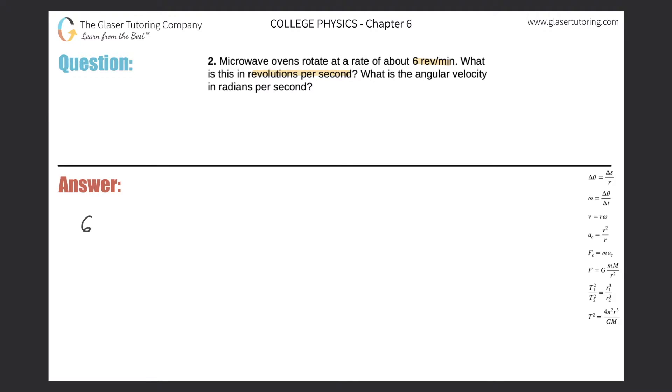We're given six revolutions per minute, or per one minute. Now my job is to convert this to revolutions per second. So I realize that I have to get rid of minutes—I have to cancel the unit. And since I have to cancel a unit that is in the denominator, that means I have to actually place the unit in the numerator.